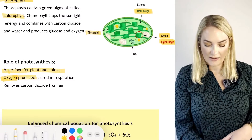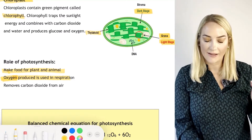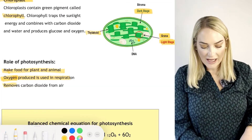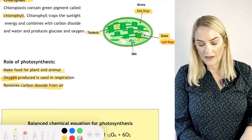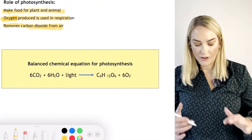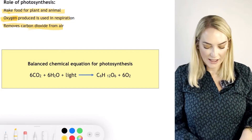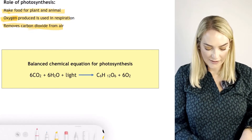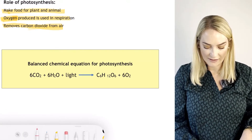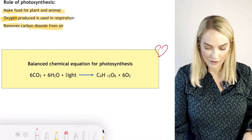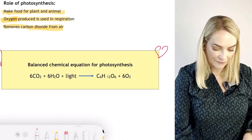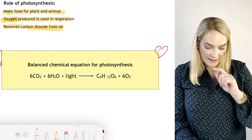Photosynthesis makes oxygen, which will be used in respiration, and it removes carbon dioxide from the air. You need to know both the word equation and the chemical equation for photosynthesis — it's very important.